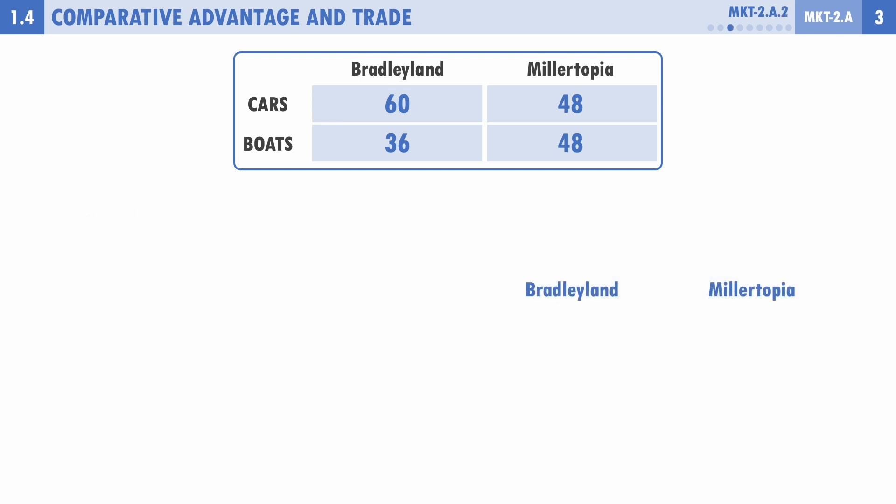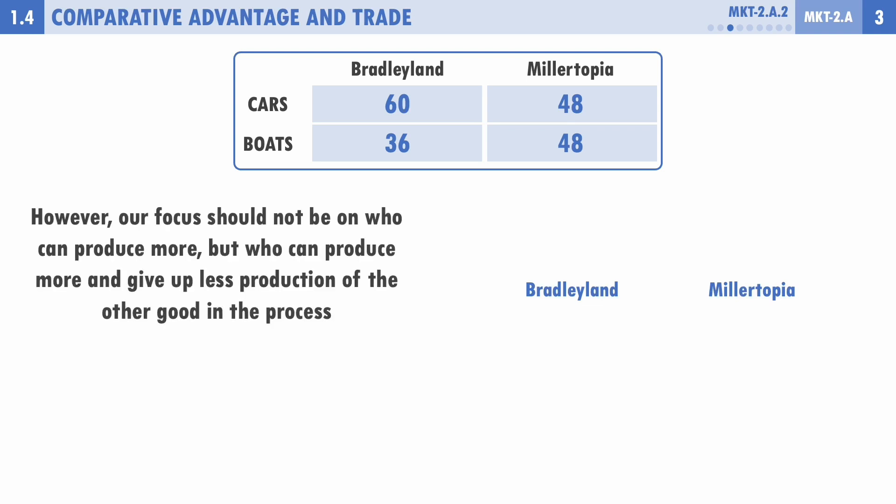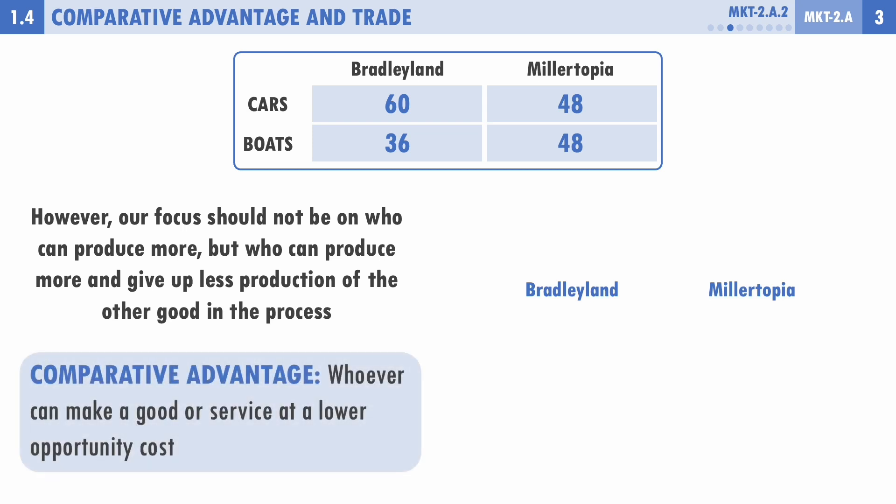Looking at both countries, we shouldn't focus only on absolute advantage — who can simply produce more isn't necessarily the most helpful information. Instead, we want to look at who can produce more of a good while giving up less production of the other good in the process. This is known as comparative advantage: who can make a good or service at a lower opportunity cost.